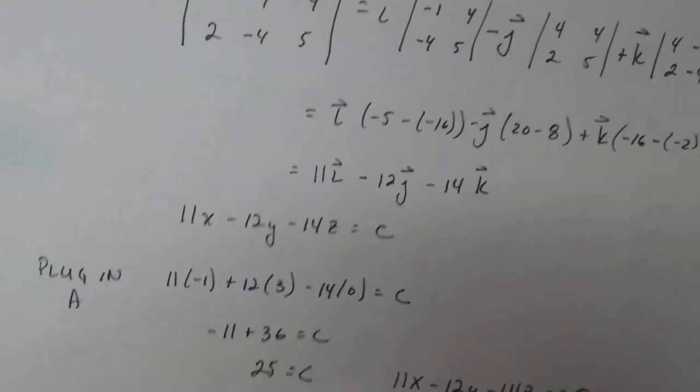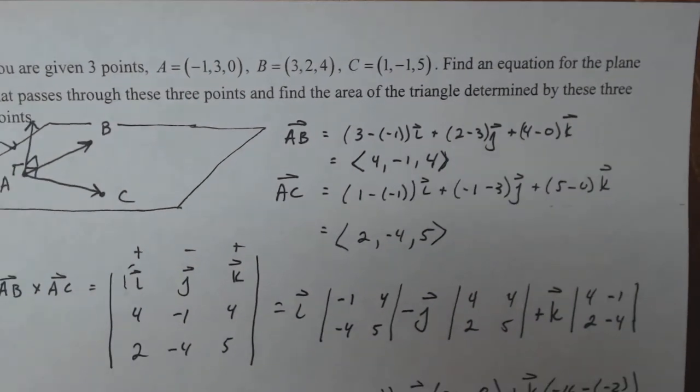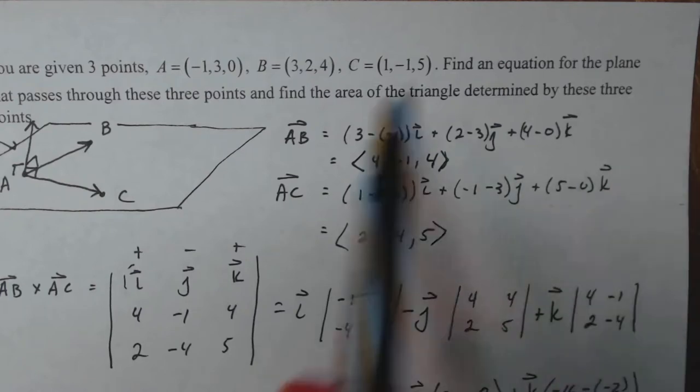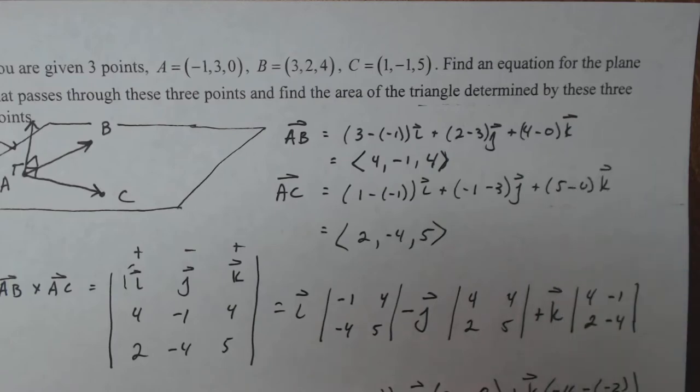So then my final plane is 11x minus 12y minus 14z equals 25. Now we have not finished the problem yet. It also says we have found the equation that passes through these three points.